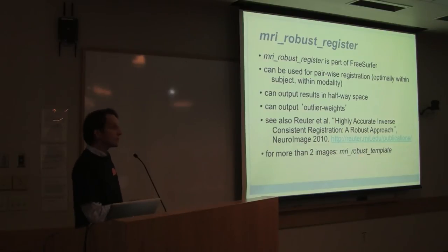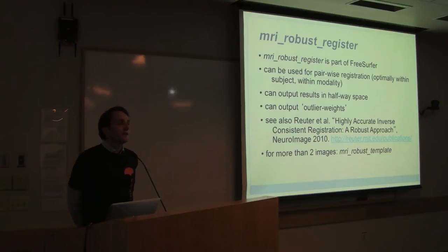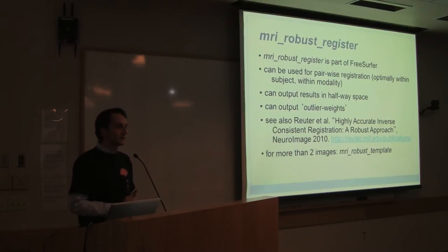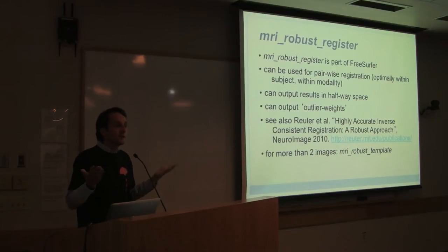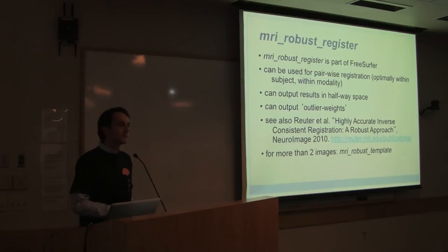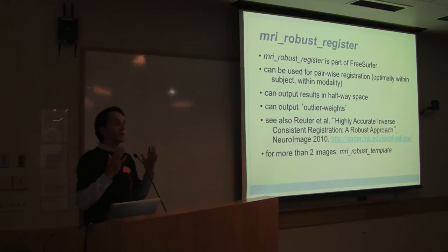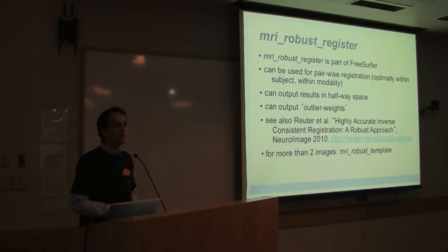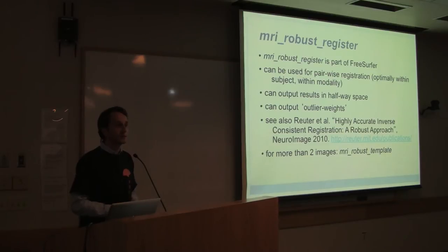If you have more than two images, you need MRIrobustTemplate. There was a question about whether this works for two subjects who are not the same person. Not so much, because then the question of what is an outlier becomes unclear — there will be anatomical differences between subjects, making the registration ill-defined. It will kind of work, but no big analysis has been done on cross-subject use since the goal is within-subject registration. There is a cross-modality extension, useful for registering T2 to T1 in the presence of jaw, neck, or positioning changes.